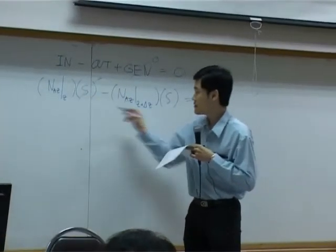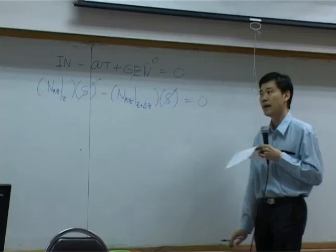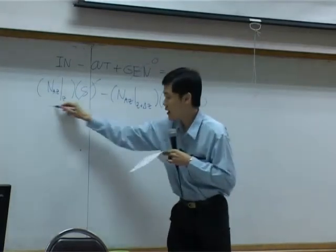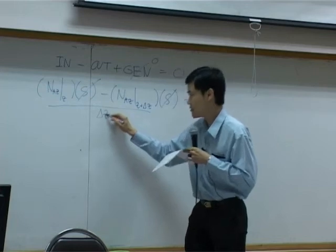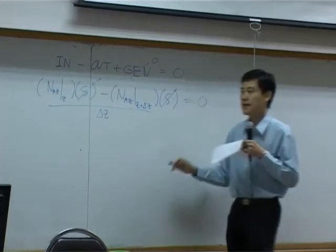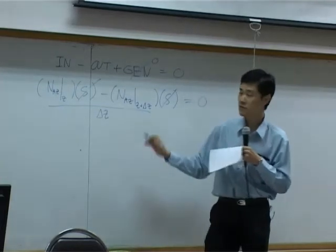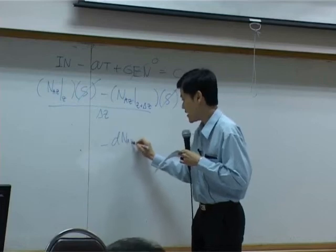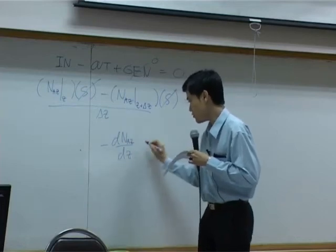So these two terms combine equal to zero at steady state. If you take the whole equation and divide it by S, S will be dropped out. Divided by delta Z for both sides, this one becomes zero as well. And then you take limit delta Z approaching zero. What you have would be minus dNAZ by dZ equal to zero.